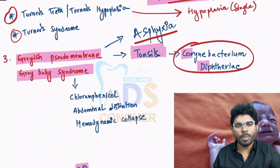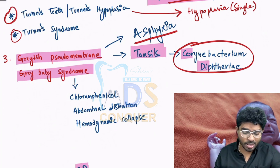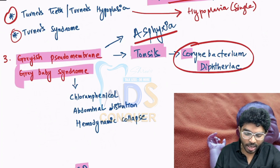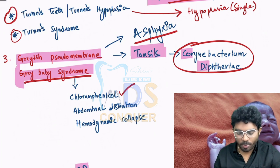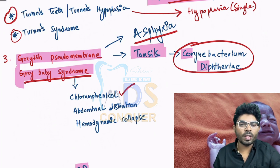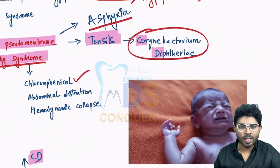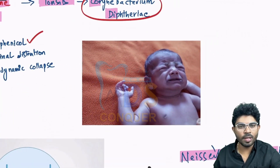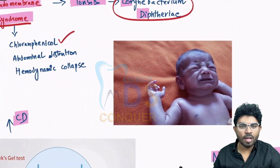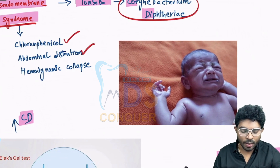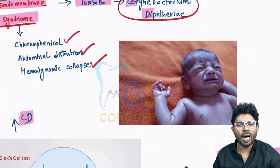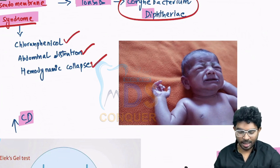Similarly, as we are talking about gray pseudomembrane, I will add a note about gray baby syndrome. Gray baby syndrome is seen whenever there is abnormal use of chloramphenicol. Gray baby syndrome is going to cause abnormal distension and hemodynamic collapse. The baby appears gray in color.